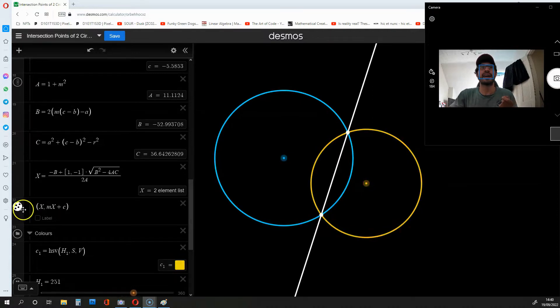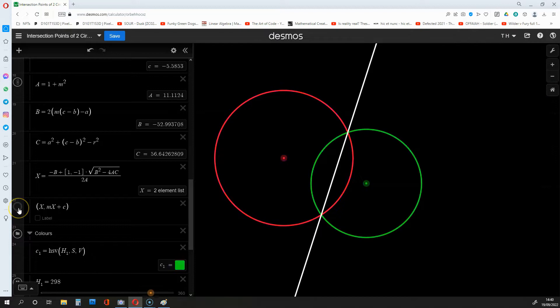Okay, and as you can see over here, these points are the intersections. So, when I switch them off, you don't see them on the graph. And when I switch them on, they appear.